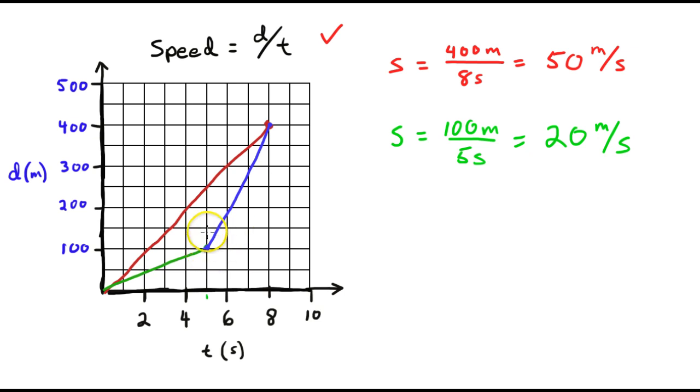Then the speed will be the distance it traveled from here to here, which is 100, 200, 300 more meters.